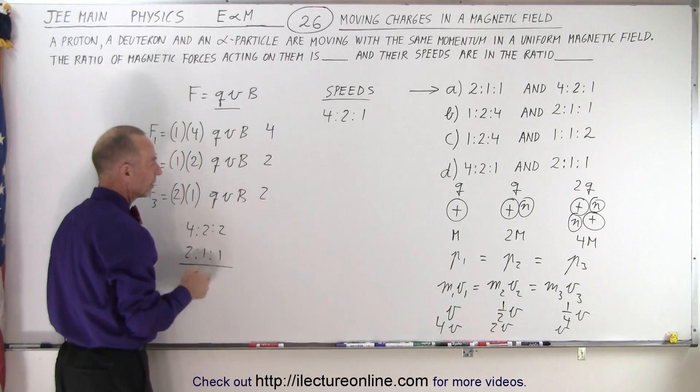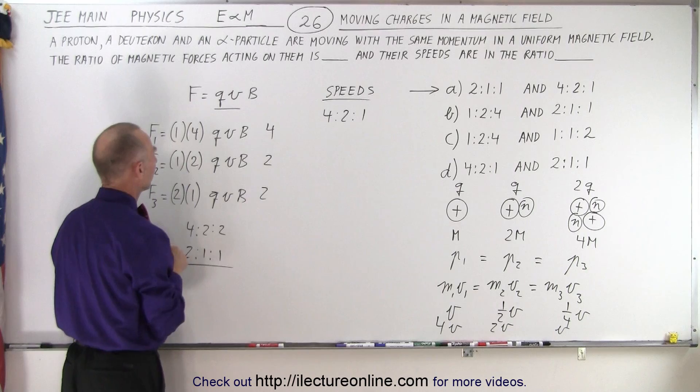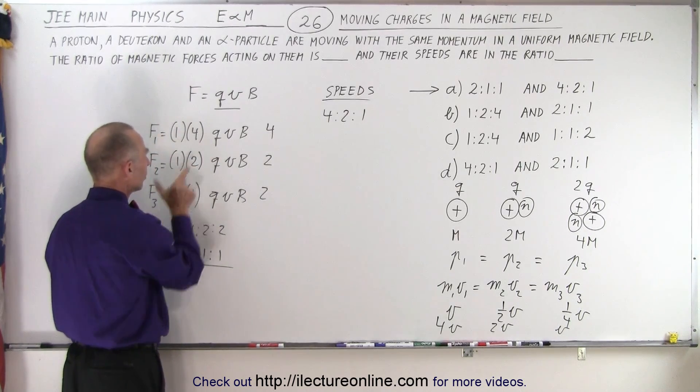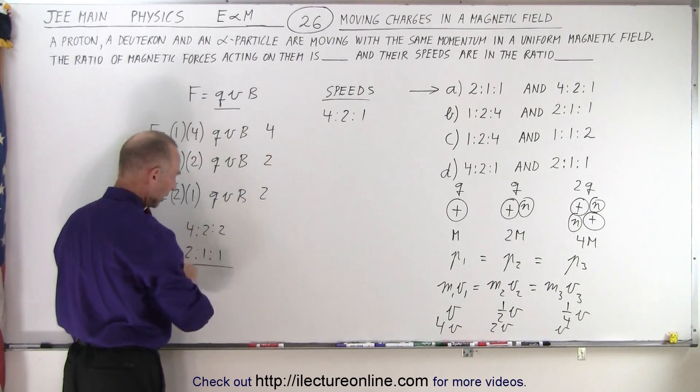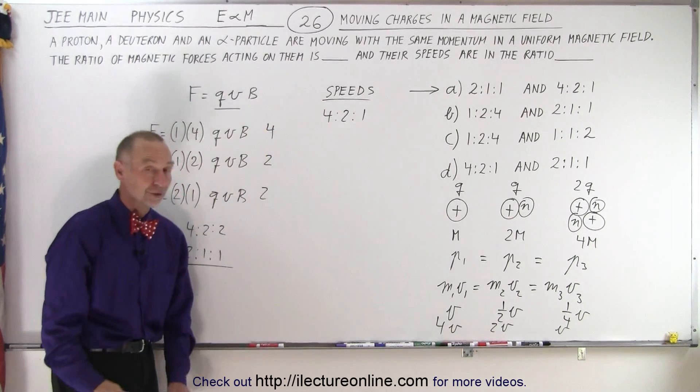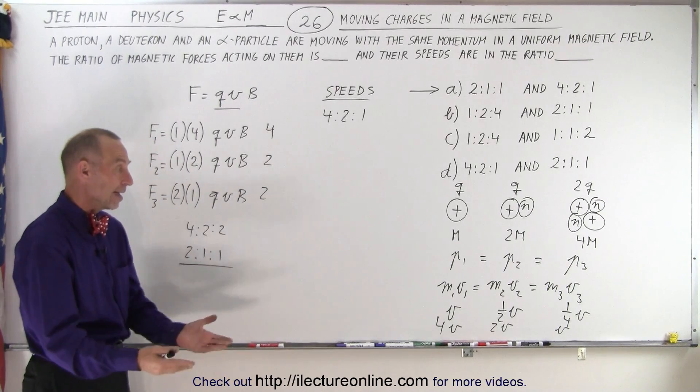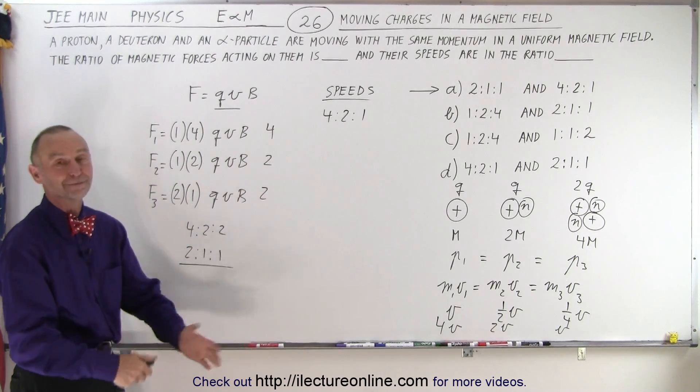For the forces, we have qvb, so I need to account for the charge and for the velocity. The velocities we already have, 4, 2, 1 was the ratio for the speeds or the velocities, and then the charges are 1, 1, and 2. When you multiply, you get 4, 2, and 2, or 2, 1, and 1, and that's the ratio of the forces. So this particular one can be done in a couple of minutes and you move on to the next one. So that's the way you want to look at these, and that's the way it's done.